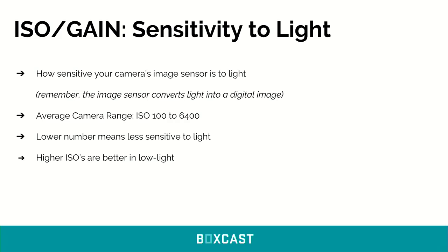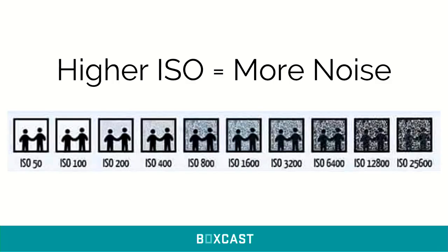Let's move on to the next thing, which is ISO slash gain. ISO is the term usually for DSLR cameras and gain is the term for most video camcorders. This is just measuring your camera's sensitivity to light — specifically how sensitive your camera's image sensor is to light. For the average camera range, there's an ISO rating of 100 to 6,400. The lower number means it's less sensitive to light, and the higher number means it's better in low light and more sensitive. One thing to note: usually the higher the ISO, the more noise you're going to see in your image, because that image sensor is so sensitive it creates digital noise, or a graininess.